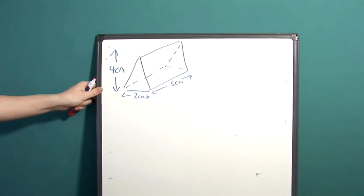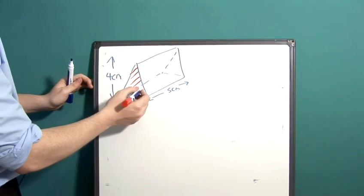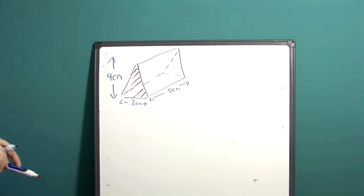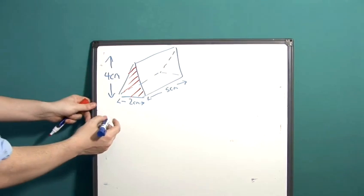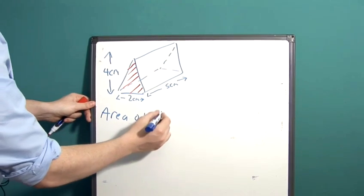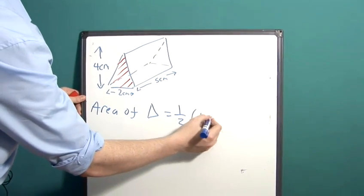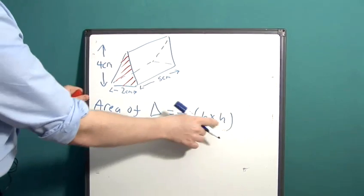To find the volume of this prism, what we first need to do is work out the area of the base shape here. To do that, we need to remember that the area of a triangle is the following: a half base times height. That's what the B and the H stand for.